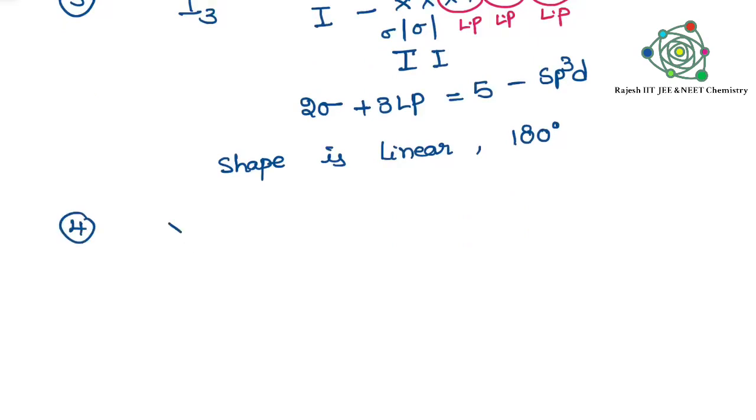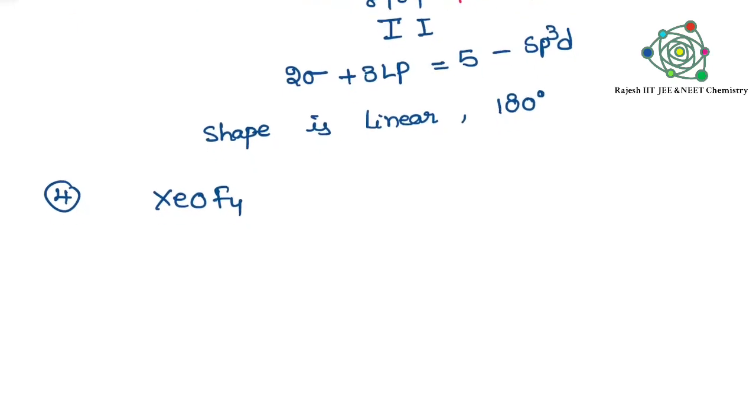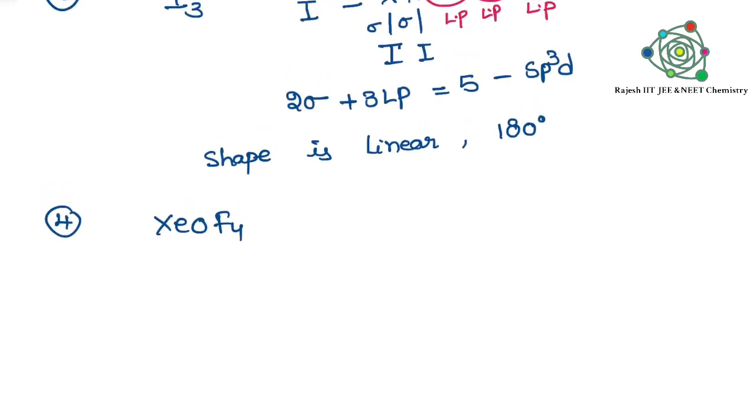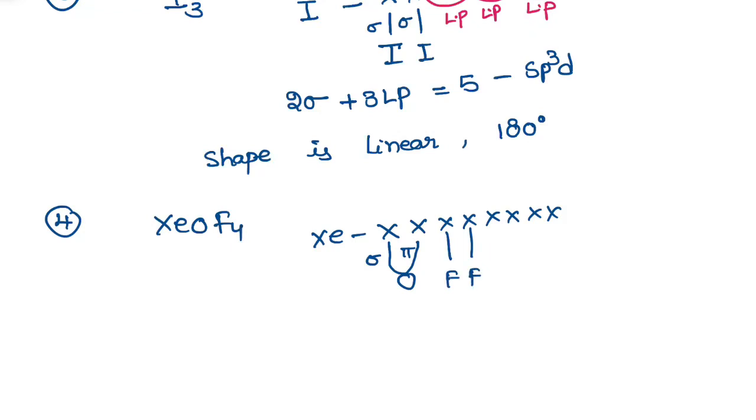Last one - this is xenon oxytetrafluoride, XeOF₄. Xenon belongs to the eighth group element - that means eight electrons are there in its valency shell. You know very well oxygen takes two electrons because one is sigma bond, another one is pi bond. There are four F's - each F can form one sigma bond.